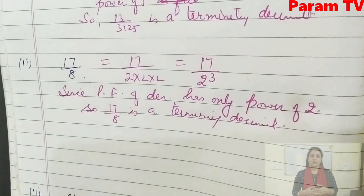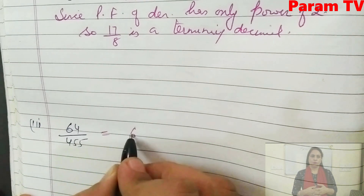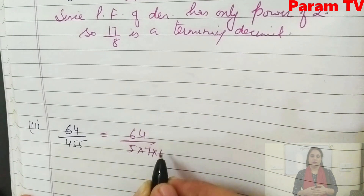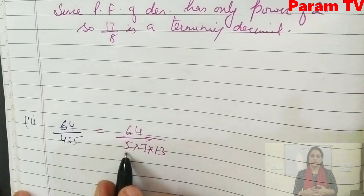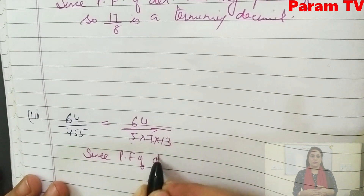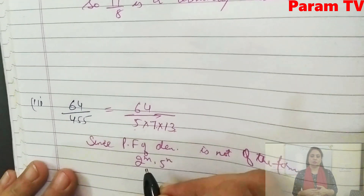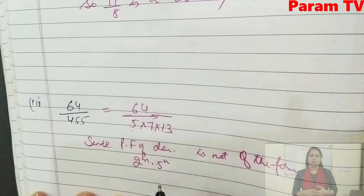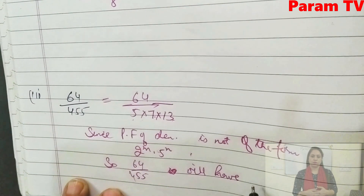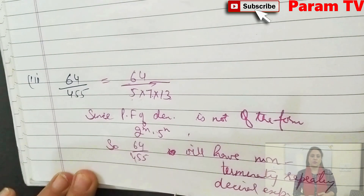It has terminating decimal expansion. Next is 64/455. If you make prime factors of 455, it will be 5 × 7 × 13. Here, not only 5 is coming as a factor — 7 and 13 are also there. Since the prime factorization of the denominator is not of the form 2^m × 5^n, it has a non-terminating repeating decimal expansion.